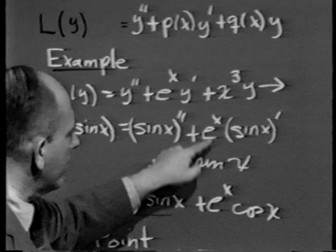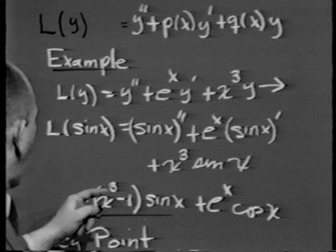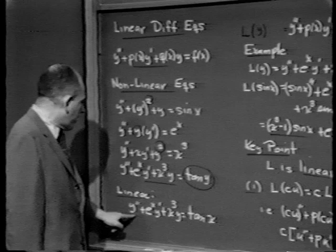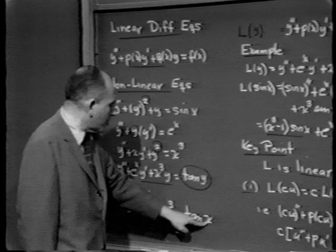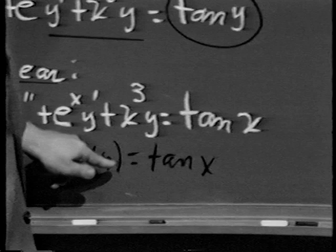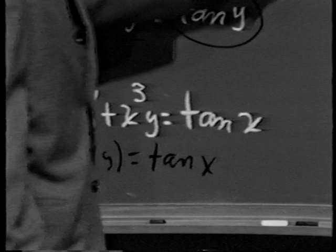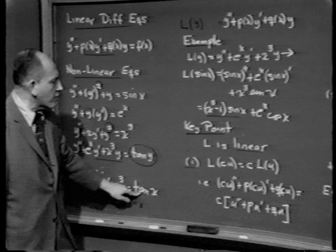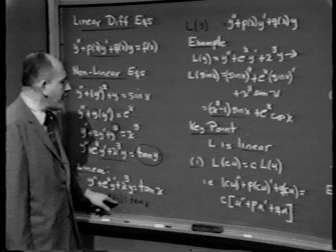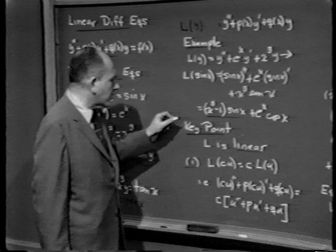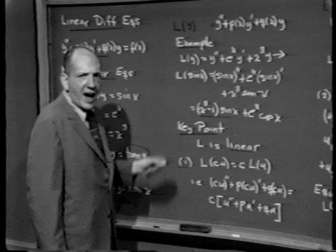To help you understand what we mean by a solution: y equals sine x would not be a solution of the equation L of y equals tan x, because when I feed sine x into the L machine, I do not get tangent x. If tan x had been replaced by x cubed minus 1 sine x plus e to the x cosine x, then y equals sine x would have been a solution. The key point is that linear modifies our L machine, not the coefficients.